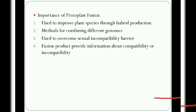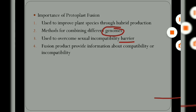The importance of protoplast fusion: this technique is used to improve plant species through hybrid production, thereby widening the genetic base of plant breeding. It is used for combining different genomes and overcoming sexual incompatibility barriers between two species. Cytoplasmic male sterility can be transferred via protoplast fusion to somatic hybrids. The fusion products provide information about the compatibility of nuclei and cytoplasm.